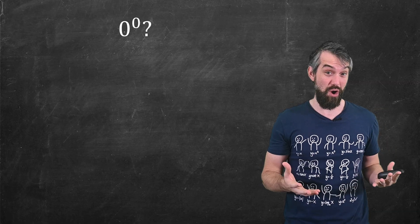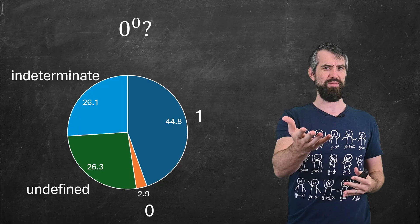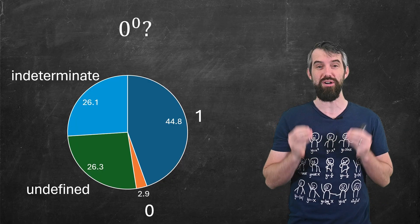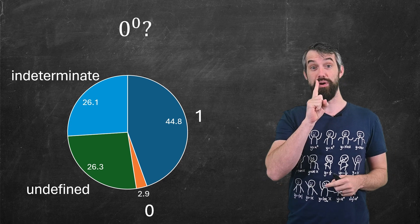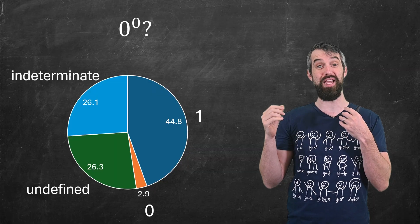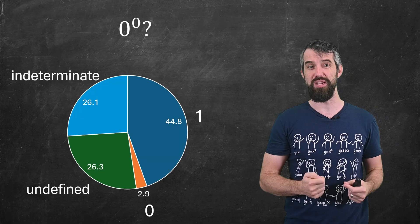I want to begin with the ever-controversial zero to the power of zero. You might think mathematicians just have one answer to what zero to the power of zero is, but it turns out they disagree. A little under half say the number is one, but then there's also big groups: about a quarter say indeterminate and about a quarter say undefined.